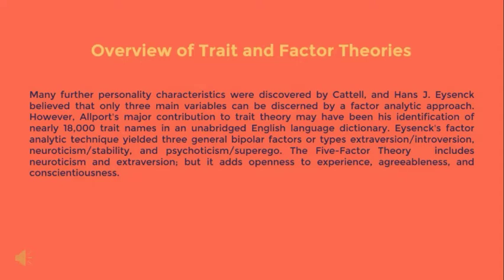These trait names continued to provide a foundation for recent factor analytic studies. Eysenck's factor analytic technique yielded three general bipolar factors: extroversion or introversion, neuroticism or stability, and psychoticism and the superego. The five-factor theory, often called the Big Five, includes neuroticism and extroversion but adds openness to experience, agreeableness, and conscientiousness. These terms differ slightly from research team to research team, but the underlying traits are quite similar.